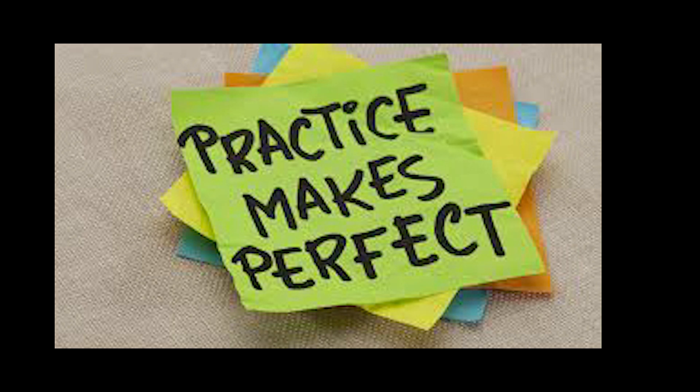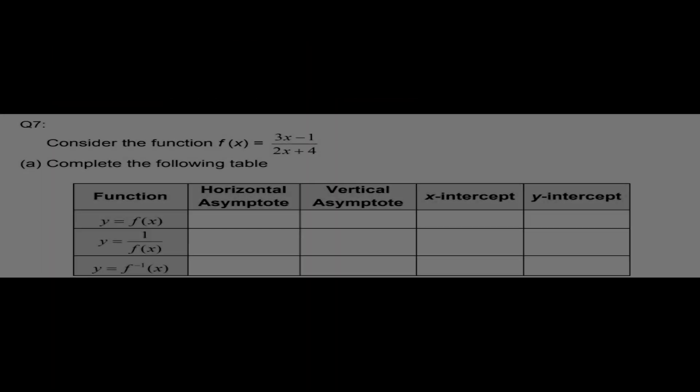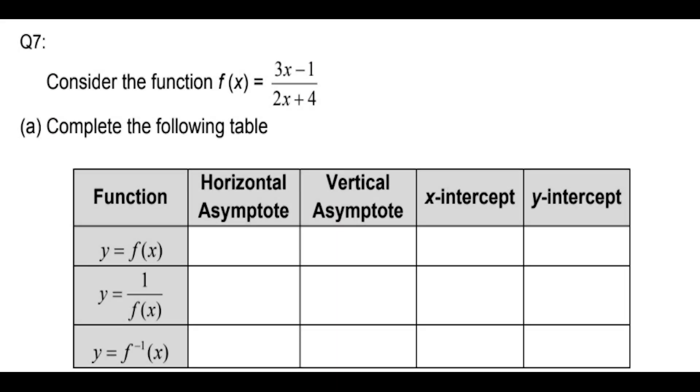Here we have a question on asymptotes. The question says that function f(x) = (3x - 1) / (2x + 4). In part a, we are given a table with functions f(x), 1 upon f(x), and the inverse of f(x).